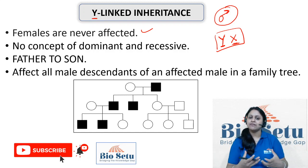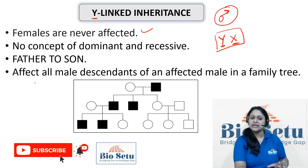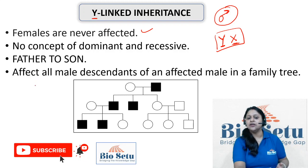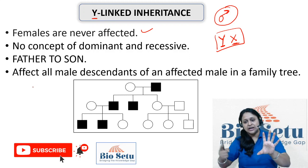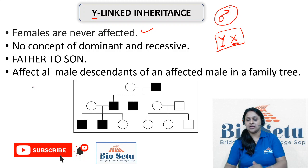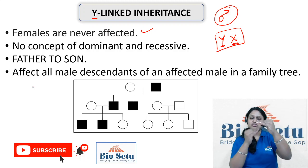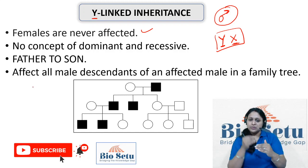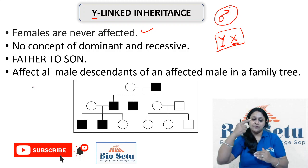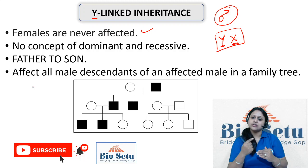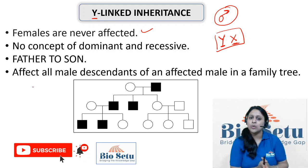Mother or a girl child is never ever affected or linked with a Y-linked inheritance trait. The next point is that it affects all male descendants of an affected male in a family tree. If one male is affected in a family, all of his male descendants will remain affected. In generation 1 if a male is affected, in generation 2 his male children will be affected, in generation 3 those male children will also be affected — this is Y-linked inheritance.